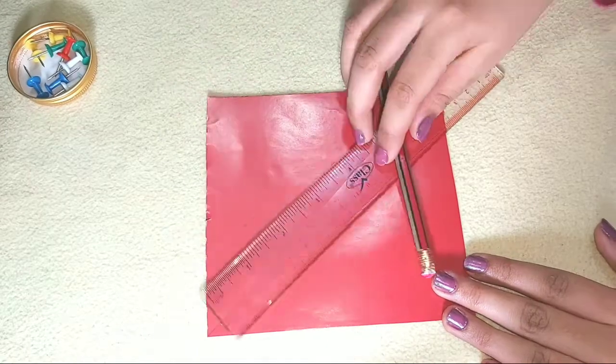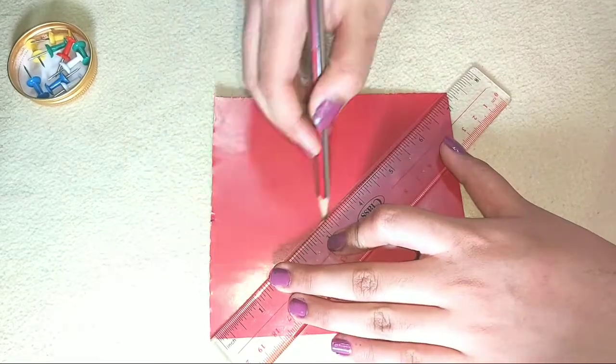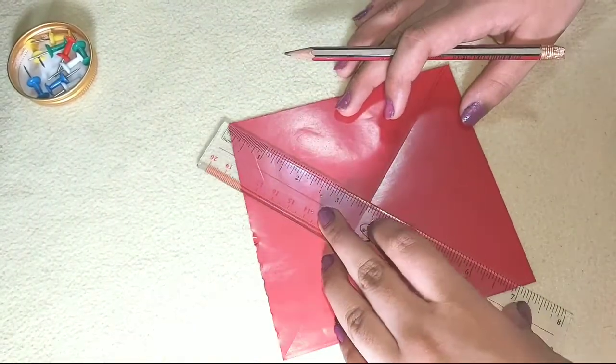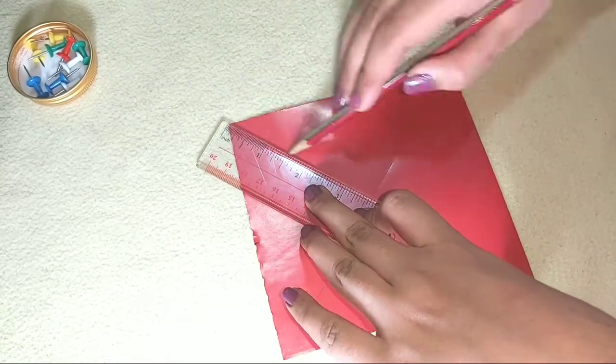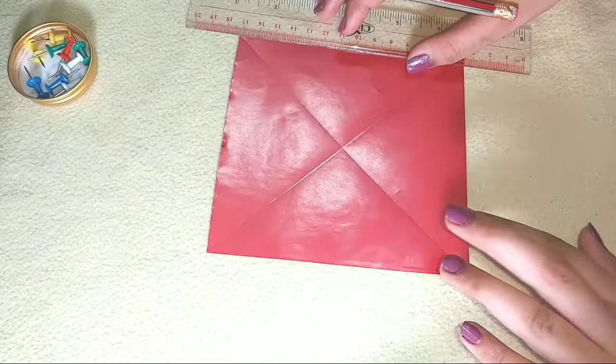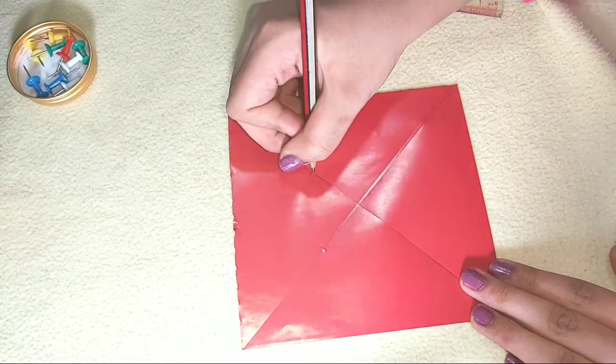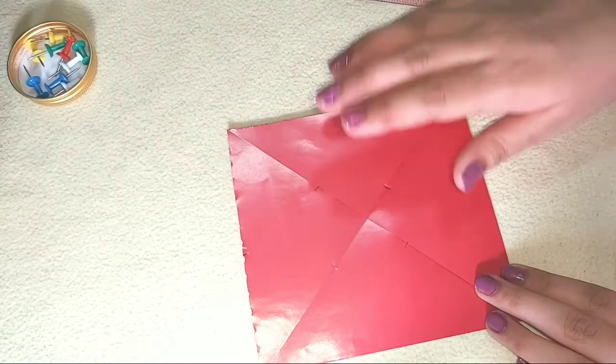So first we have to draw one slanting line like this, and one more slanting line. Next we have to mark halfway through the lines so that we can cut properly.